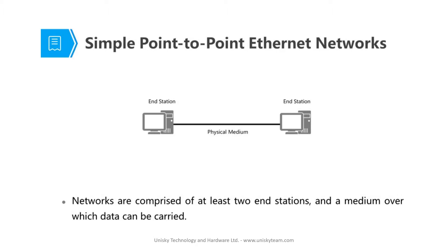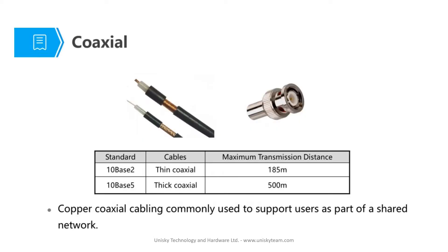A simple network is comprised of at least two end stations and a medium over which data can be carried. This data could be resources shared from point A to point B. It is not in all cases that we have physical mediums connecting end stations. In some cases we have wireless connection between point A to point B or other points of a network.